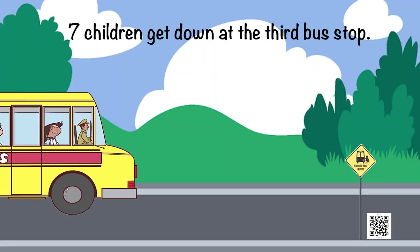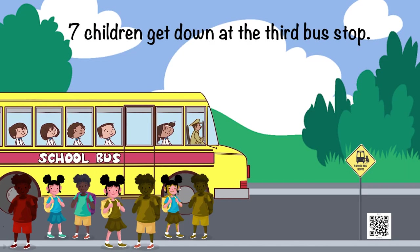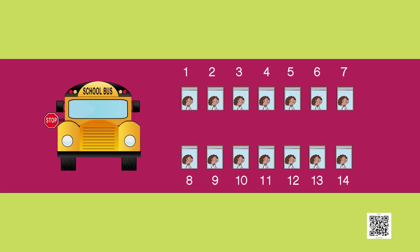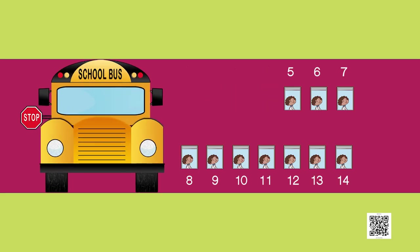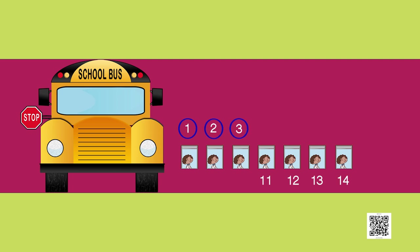Let us see what happens next. 7 children get down at the third bus stop. How many children are there in the bus? That means we now need to subtract 7 children from 14 children. 14 minus 7 — counting back: 1, 2, 3, 4, 5, 6, and 7. Perfect! There are 7 children in the bus at the third stop.